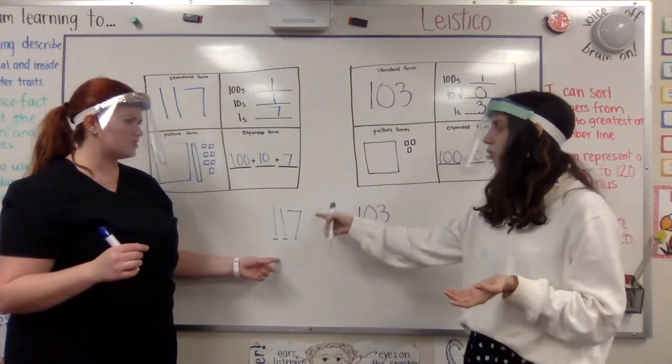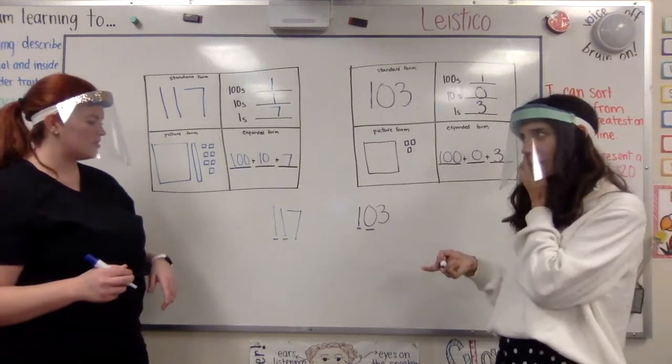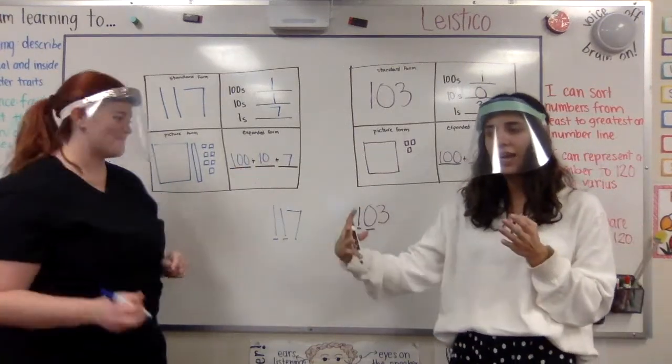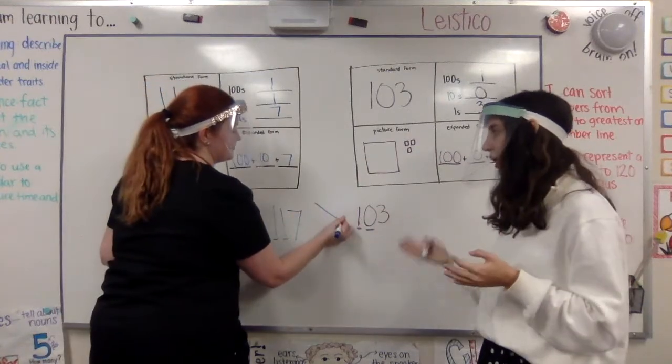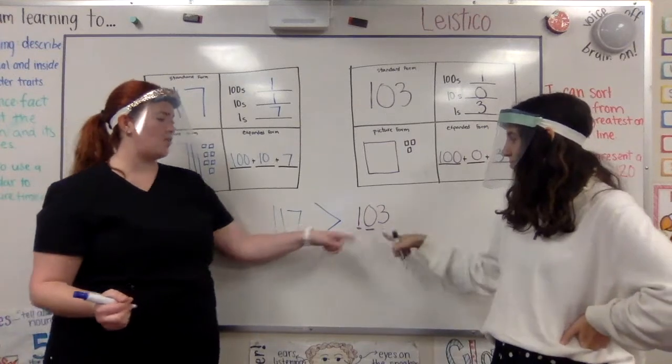That's right. So this number is greater than 103. Okay. So for greater than symbol, I know that the bigger side has to go towards the bigger number. That's right. So it's going to say 117 is greater than 103.